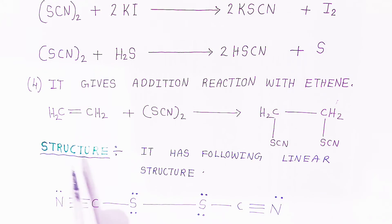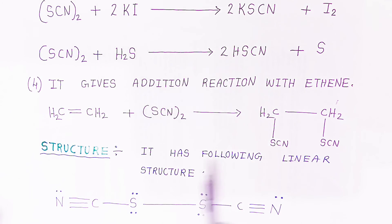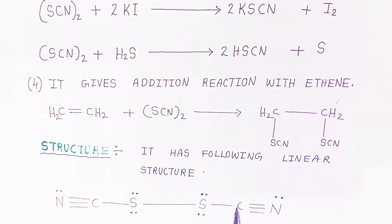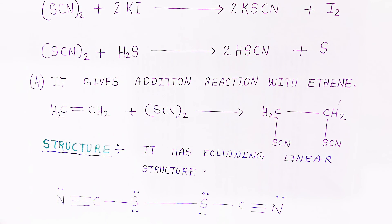The possible structure of thiocyanogen has a linear arrangement with a sulfur-sulfur single bond, each sulfur bearing lone pairs and connected to a cyanide (CN) group on each side. This is a very important compound. Please share and subscribe. Thank you, have a nice day, God bless you.